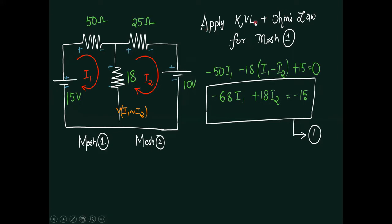I would like to apply KVL in combination with Ohm's law for mesh number one. When current travels from positive to negative, there is a drop across the resistance: minus 50 into I1, minus 18 into (I1 minus I2), plus 15, equals zero. Algebraic sum of all voltages in the enclosed path equals zero — that is KVL. V equals IR is Ohm's law. This equation is equation number one.